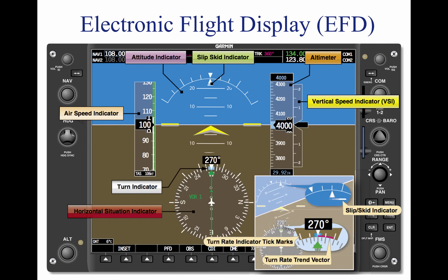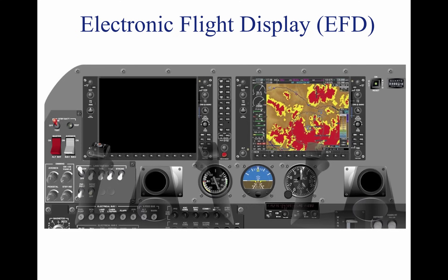The slip/skid indicator is the horizontal line below the roll pointer. Like a ball in a turn and slip indicator, a bar width off center is equal to one ball width displacement. The turn rate indicator is typically found directly above the rotating compass card. Tick marks to the left and right of the lubber line denote the turn. Typically denoted by a trend line, if the trend vector is extended to the second tick mark, the aircraft is in a standard rate turn. The sixth instrument, normally associated with the six-pack package, is the tachometer — the only instrument not located on the PFD. The tachometer is normally located on the multifunction display, but in the event of a display screen failure, it is displayed on the remaining screen with the PFD flight instrumentation.